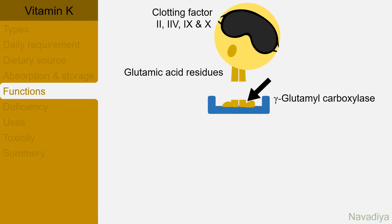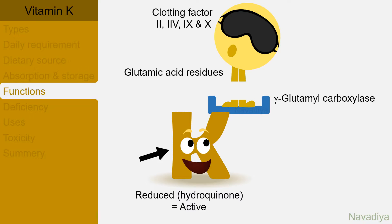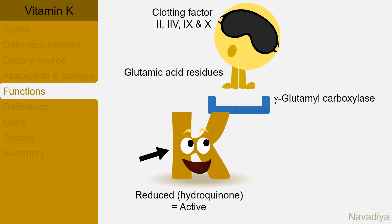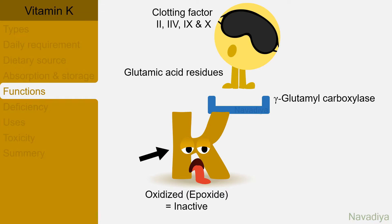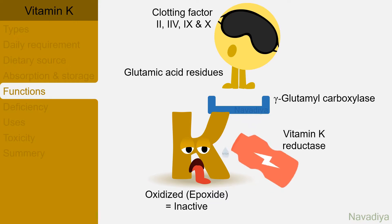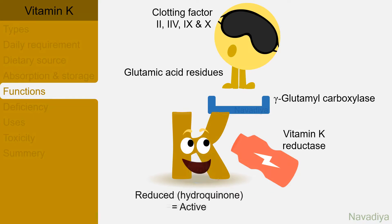Vitamin K in its reduced hydroquinone form works as a co-factor in this carboxylation reaction. In the reaction, its active hydroquinone form is converted to an oxidized epoxide form which is inactive. To reactivate vitamin K, we have the enzyme vitamin K reductase. This enzyme, with help of NADH, converts vitamin K back to its active reduced form, which can then contribute in carboxylation of other molecules of clotting factors.